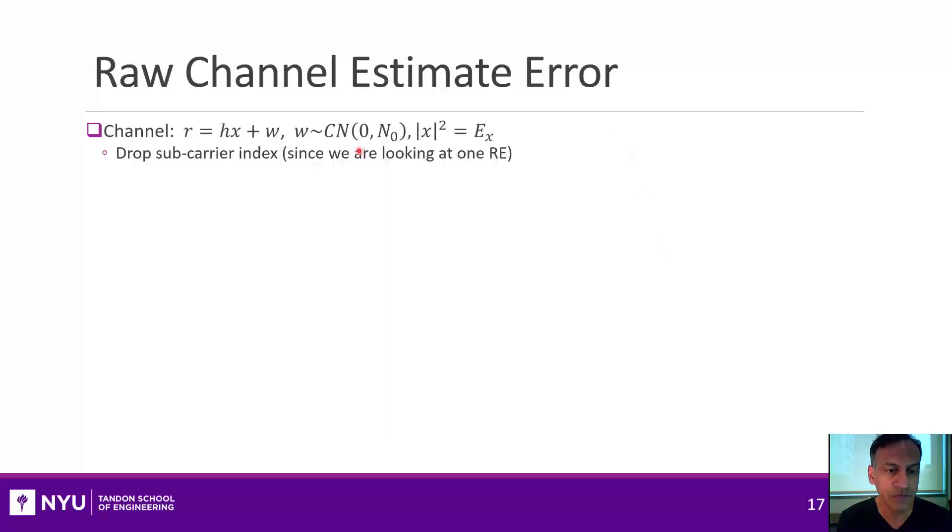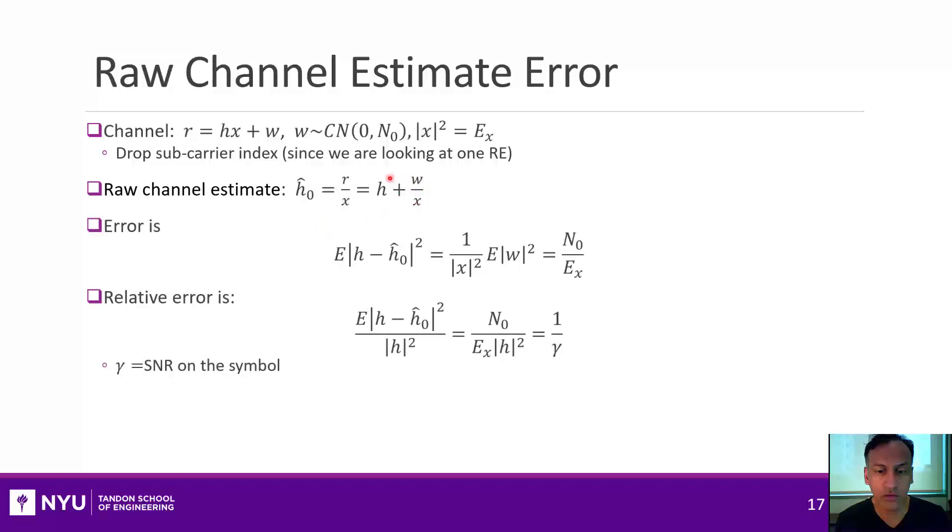So here's our channel. I've dropped the subcarrier index n, but I just want to look at one index here. So we have r is the channel h times the transmitted symbol x plus noise. So I'm going to compute this raw estimate, which is h hat n, which is taking the received symbol divided by x. If I just substitute that in, I would have the true channel plus this noise term, which is the original noise scaled by x. So if I take a look at this and look at the error, the error will just be this noise term divided by x. So the variance of that noise would be the original noise divided by the signal power.